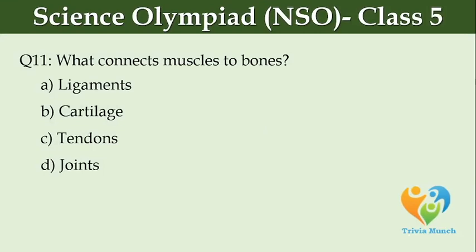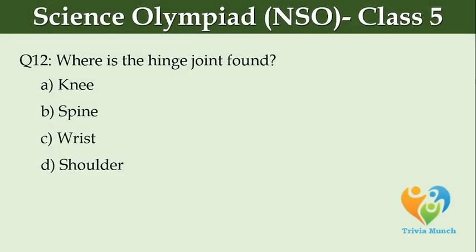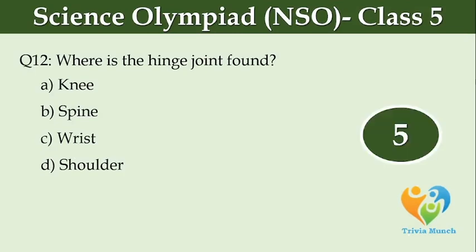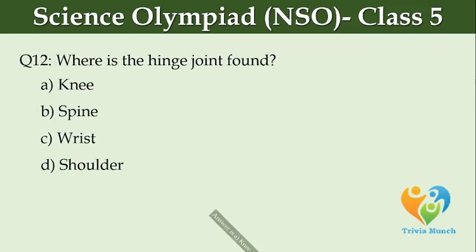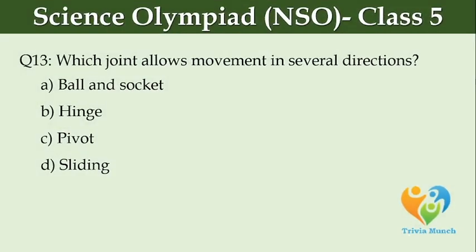What connects muscles to bones? Option A: ligaments. Option B: cartilage. Option C: tendons. Option D: joints. Where is the hinge joint found? Option A: knee. Option B: spine. Option C: wrist. Option D: shoulder. Which joint allows movement in several directions? Option A: ball and socket. Option B: hinge. Option C: pivot. Option D: sliding.